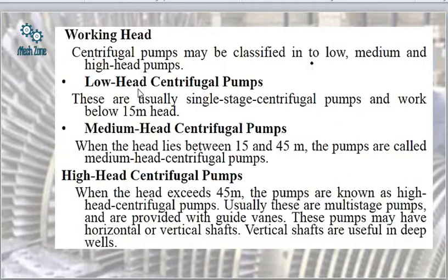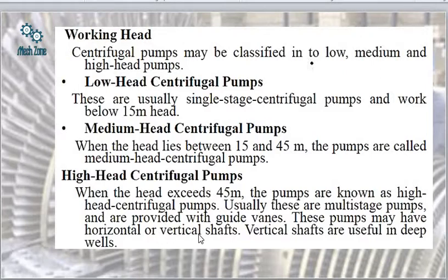On the basis of working head, centrifugal pumps are classified as low, medium, and high head pumps. When the head is below 15 meters it is low; between 15 to 45 meters it is medium; and above 45 meters it is a high head centrifugal pump. These pumps may have either vertical or horizontal shafts depending on configuration. Vertical shafts are useful in deep wells.